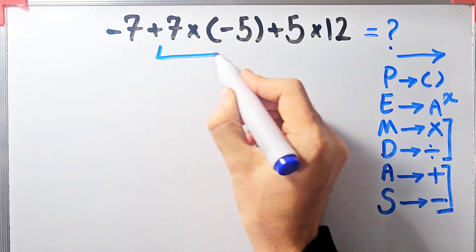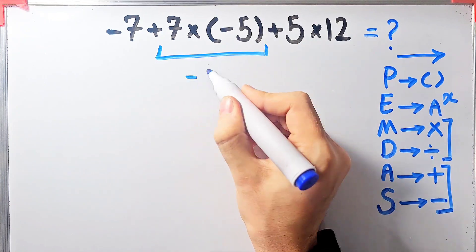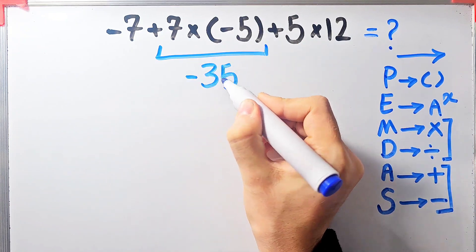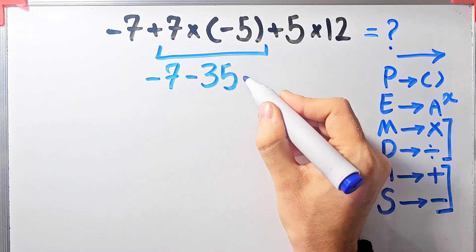Seven times negative five equals negative thirty-five. Now the question is negative seven minus thirty-five plus five then times twelve.